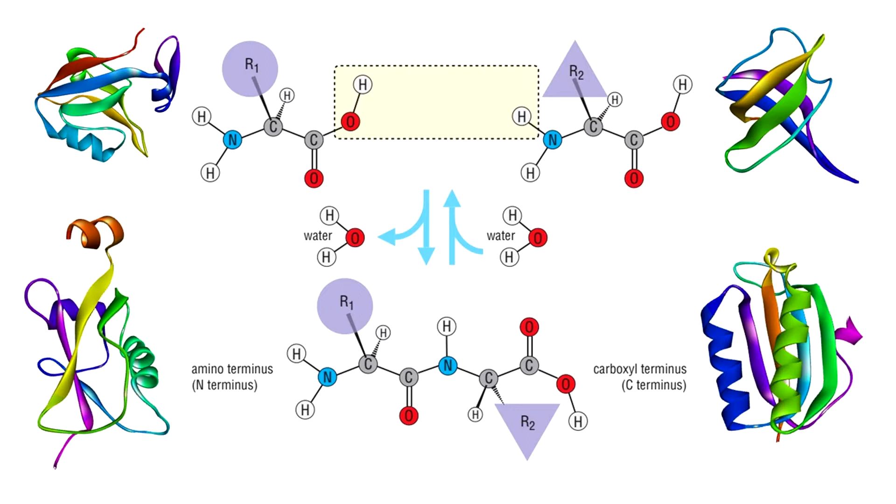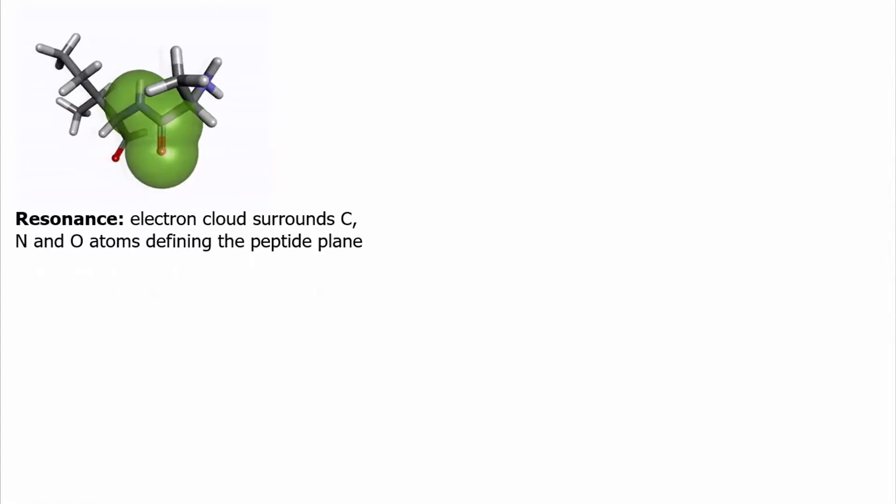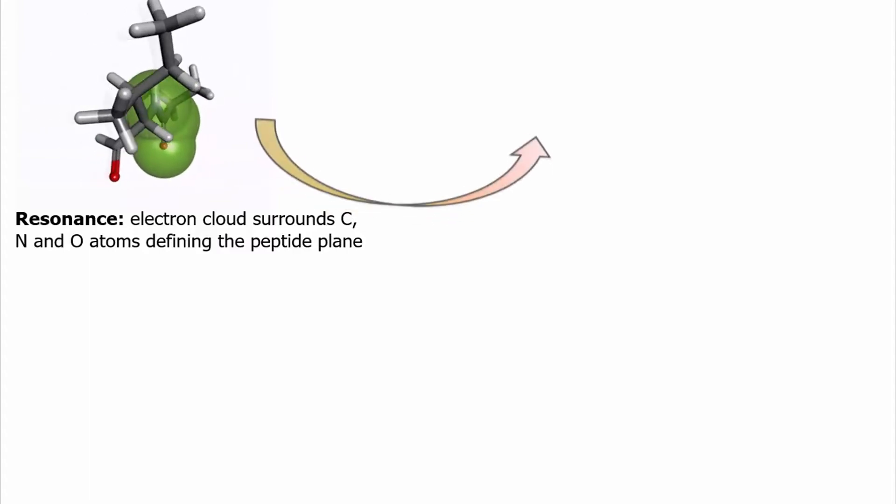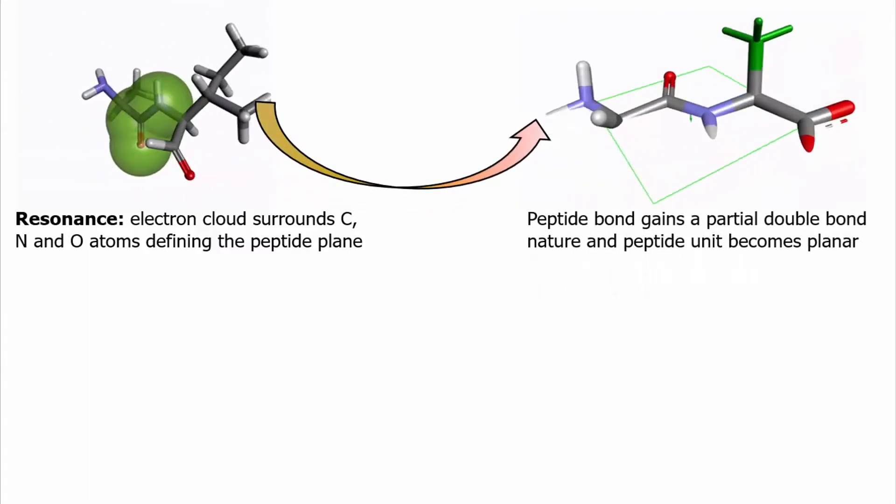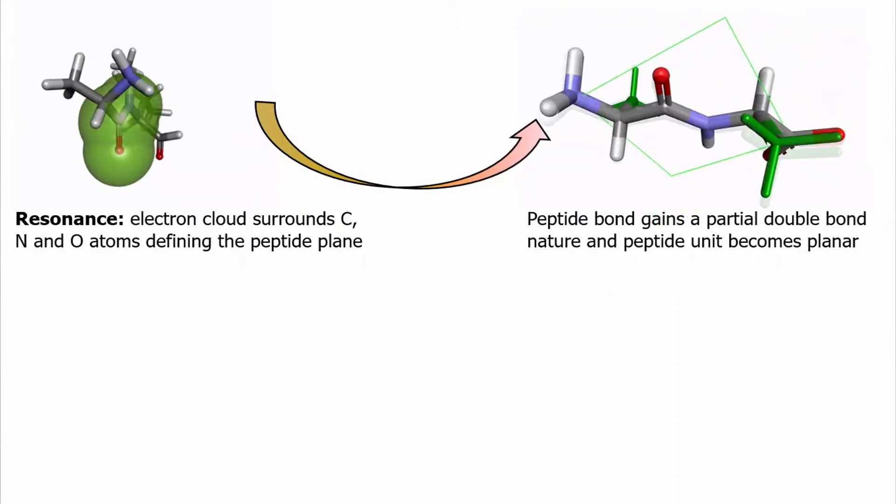The properties of the peptide bond account for several important properties of polypeptide chains in water. For example, peptide bonds are very stable. The stability of peptide bond maintains the integrity of protein chains until their degradation. Another crucial property is the planar structure of peptide bonds. Because of quantum resonance, that is delocalization of electrons over several atoms, the peptide bond gains a partial double bond character. This restricts any rotation around the peptide bond.